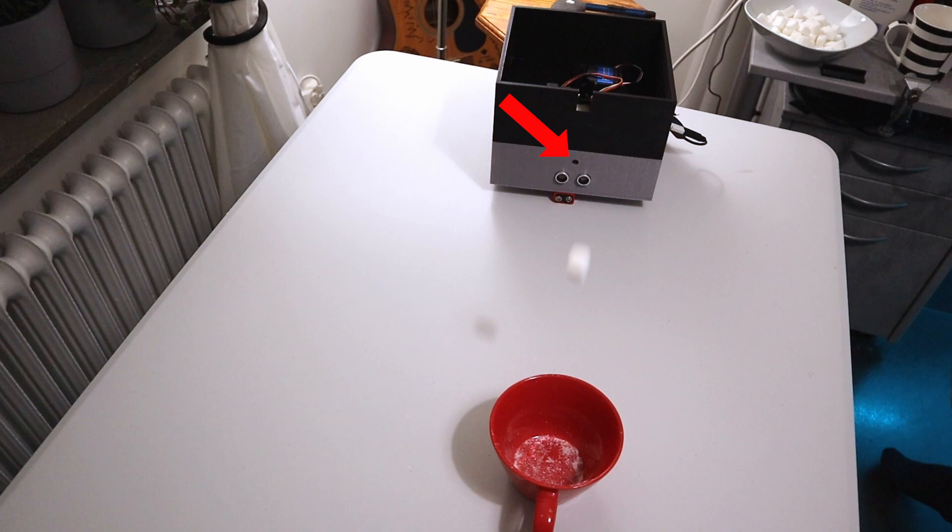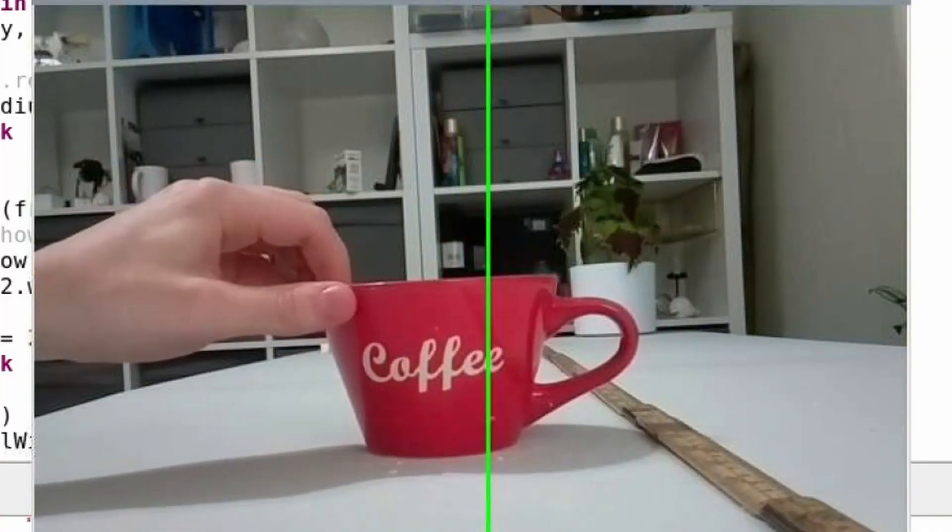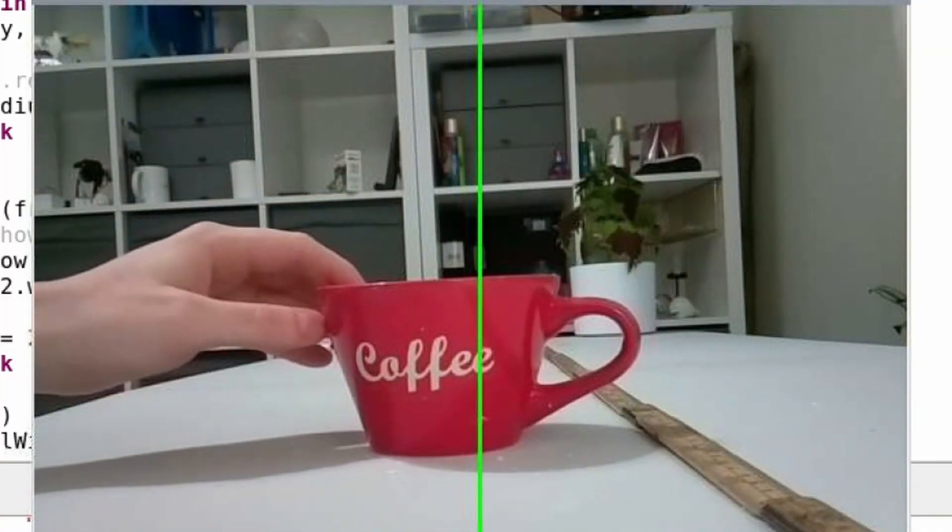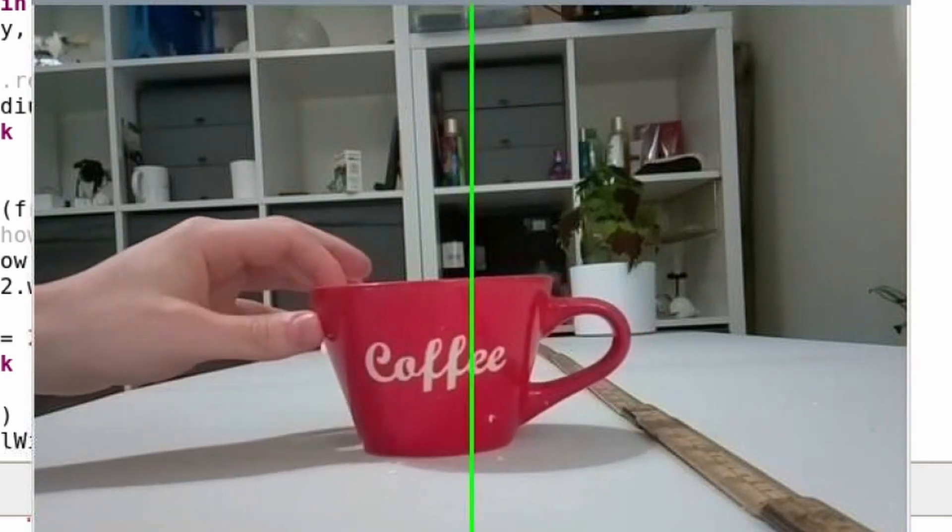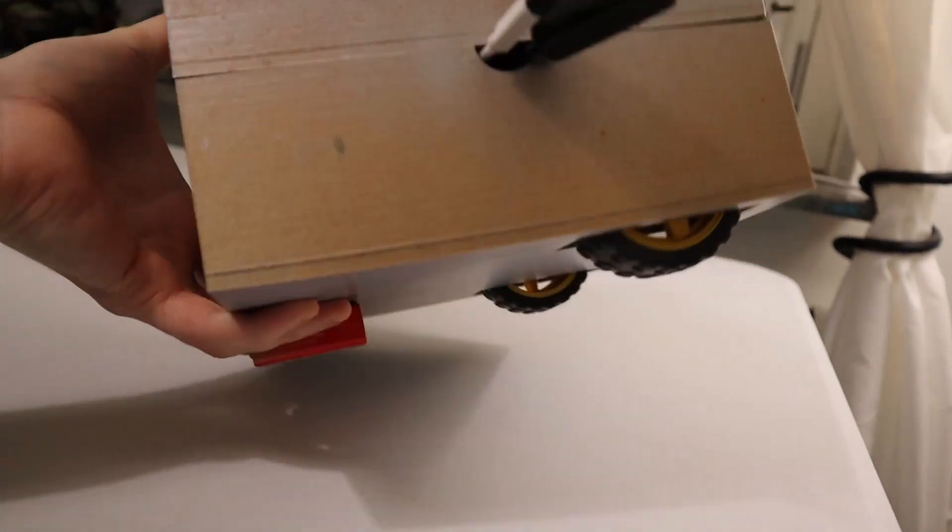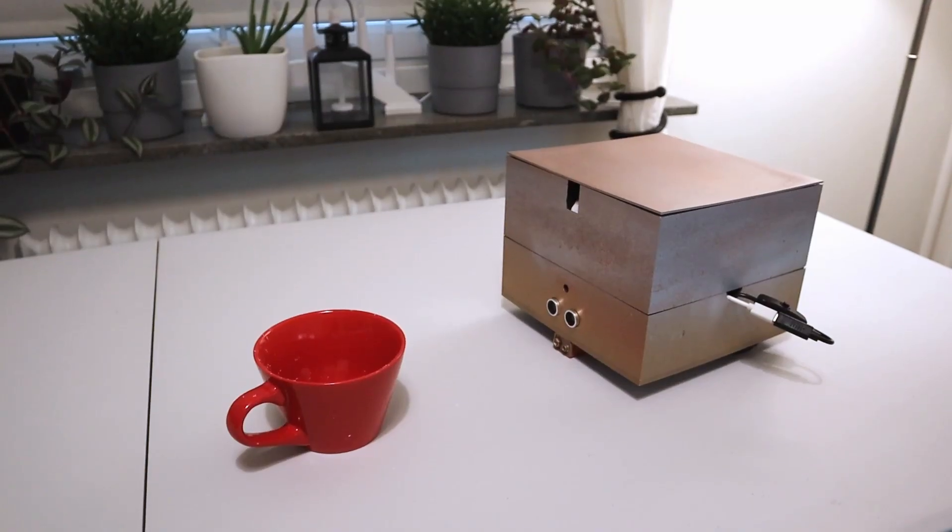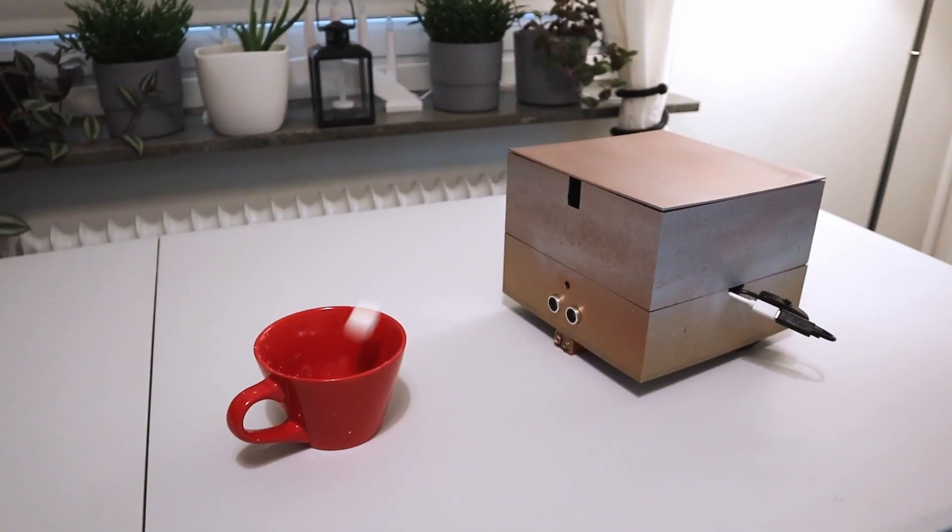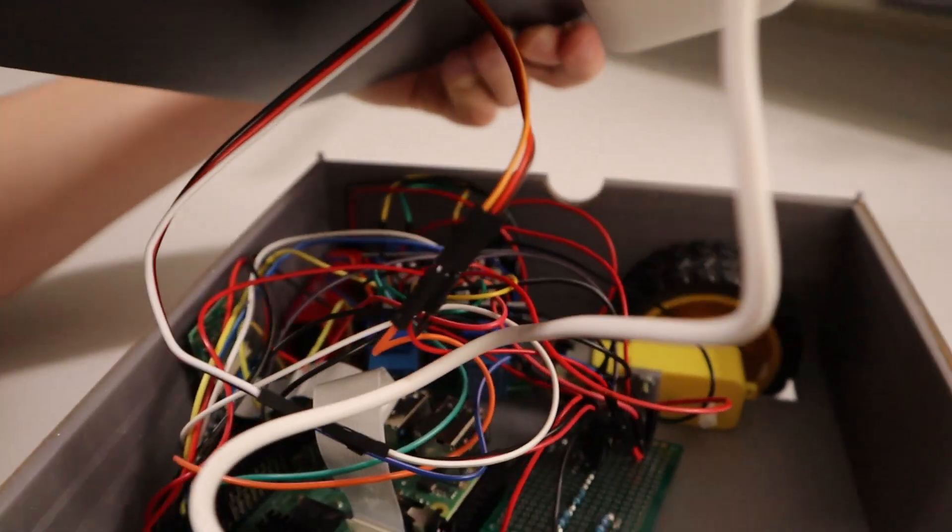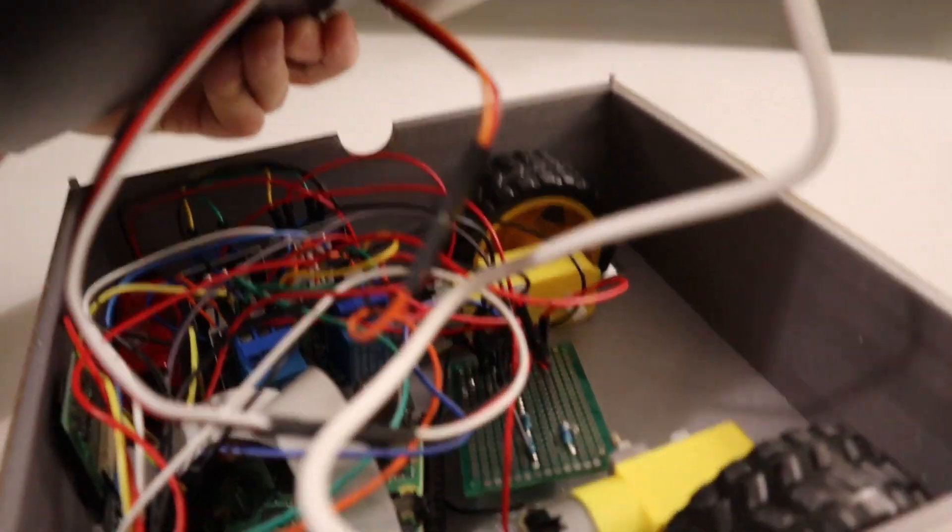It has a camera on board right here that detects the largest red object in the frame and returns information of where the center of it is. To get the cup in the middle of the frame, it uses two wheels to wiggle itself back and forth. To measure how far to launch the sugar cubes, it uses an ultrasound sensor. This is all controlled by a Raspberry Pi 4 and powered by a power bank.